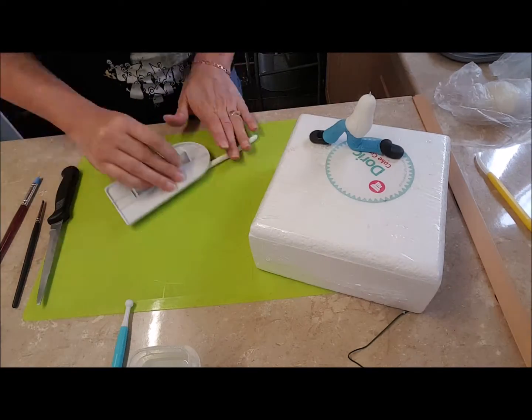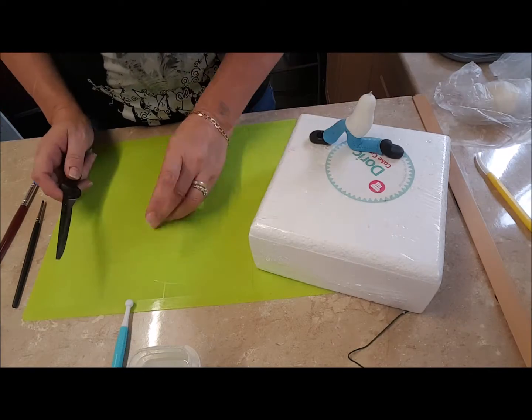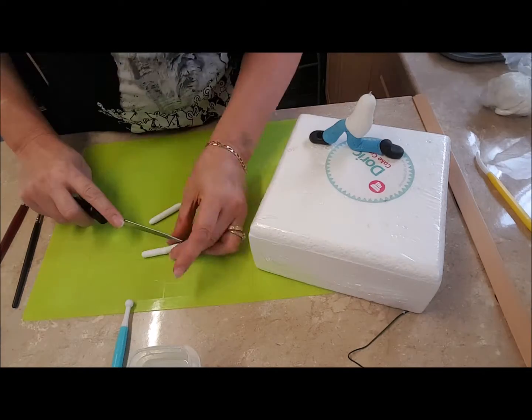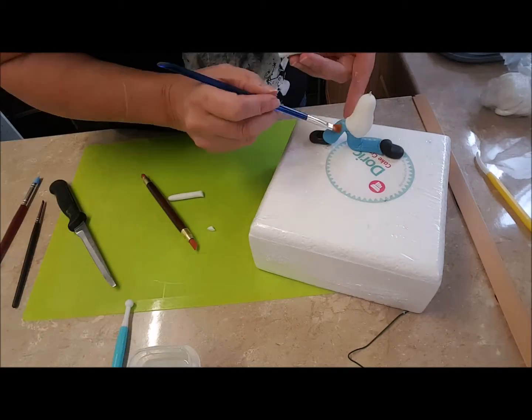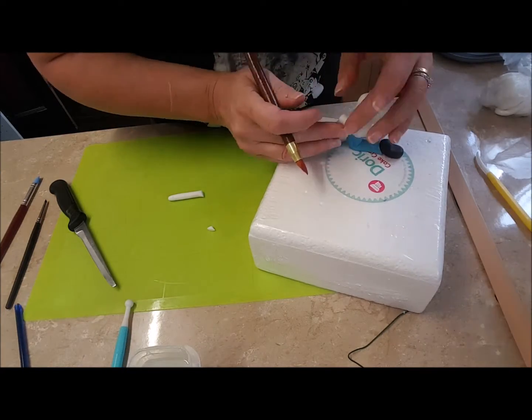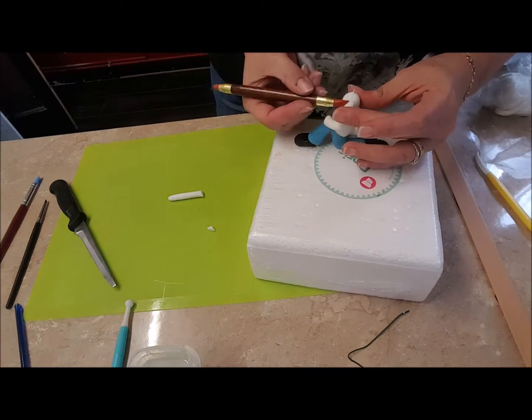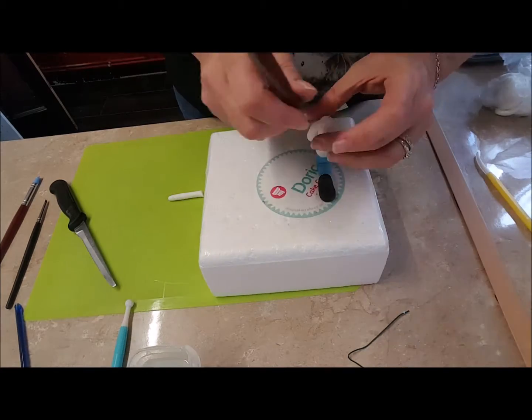Next is his arms. Hollow out the end where the hand is going to go and place the arms where you want it and blend it in.